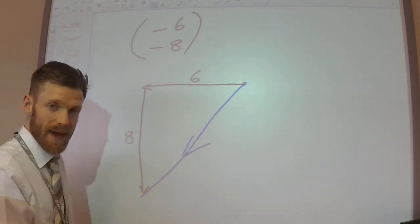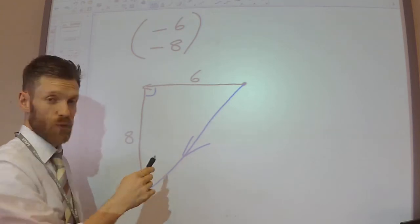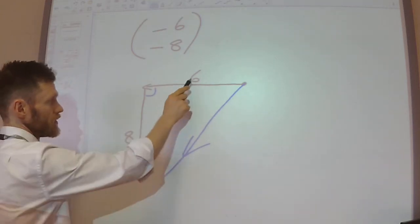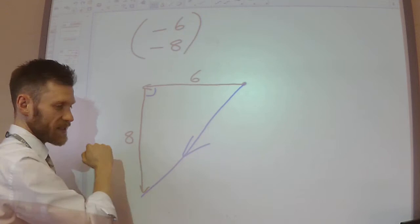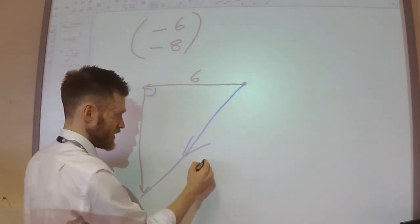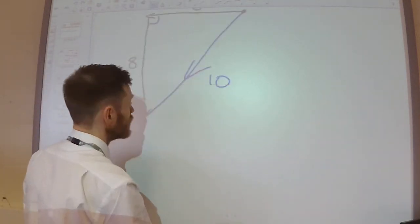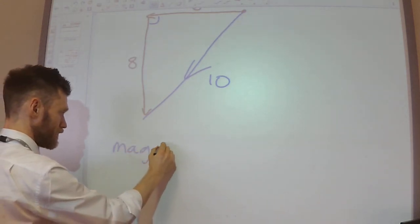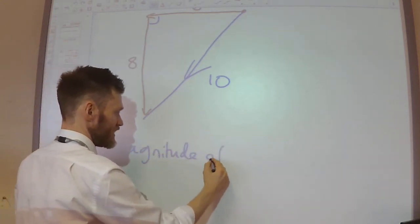To get the magnitude of that vector, do a quick bit of Pythagoras: 6 squared plus 8 squared, so 36 plus 64 is 100, so this would be 10. So I've got a magnitude of 10.